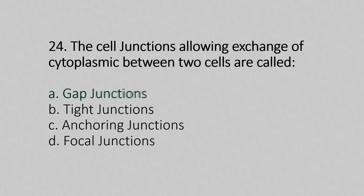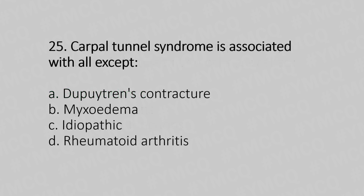Now let's move to question number 25. Carpal tunnel syndrome is associated with all of the following except: Option A: Dupuytren's contracture. Option B: myxedema. Option C: idiopathic. Option D: rheumatoid arthritis. And the answer is Option A — Dupuytren's contracture.